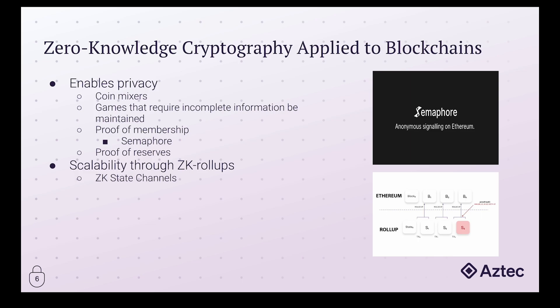Moving on to games — prior to zero-knowledge proofs, there really wasn't a great way to play games that require incomplete information. Battleship is a great example, as is Mastermind. Another well-known ZK game is Dark Forest, which implements a cryptographic fog of war — allowing you to discover new territory and planets to conquer. Without this masking mechanism, all planet positions would be known to everyone, removing all challenge from the game.